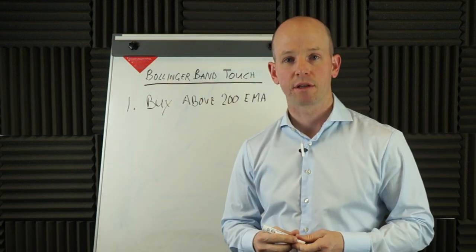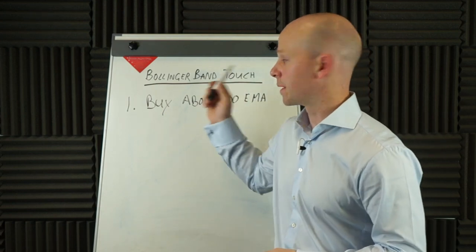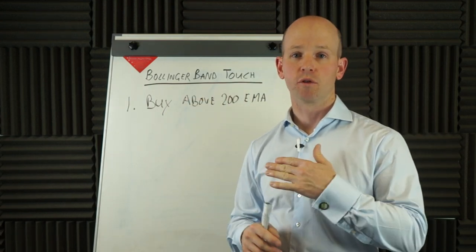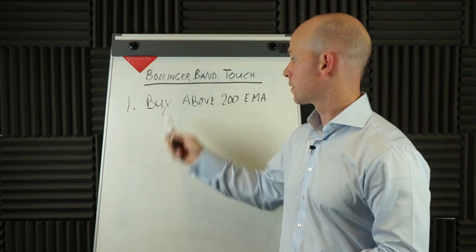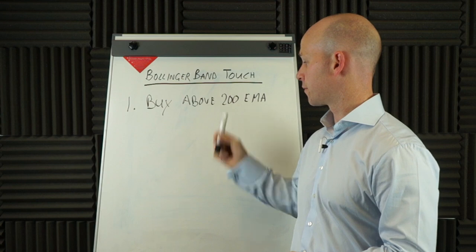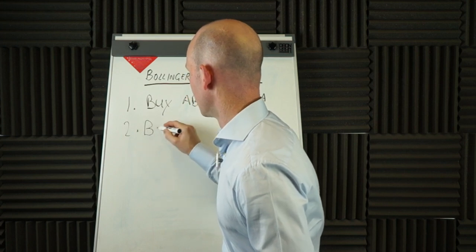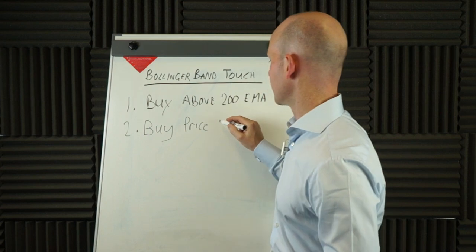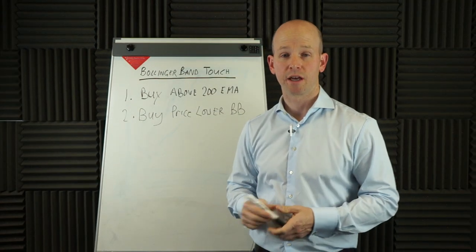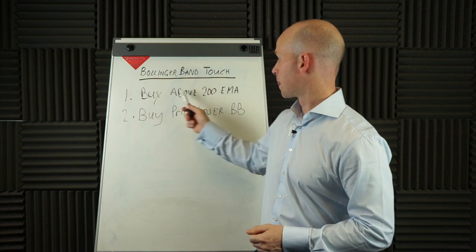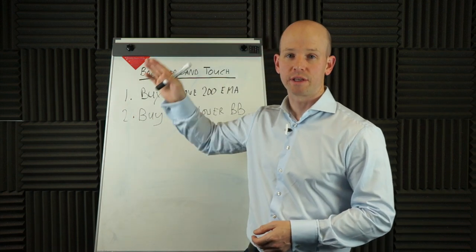If you don't know what Bollinger Bands are, I encourage you to apply them to your chart — all charting software packages have Bollinger Bands. They're made up of three bands: you've got the centre line or moving average, then the upper band and the lower band. For a buy setup — we're looking for buys above the 200 EMA — the buy signal is: buy when the price touches the lower Bollinger Band. Simple as that, and opposite for short. If we're looking for short trades, we'd want to be below the 200 EMA and short when price touches the upper Bollinger Band.